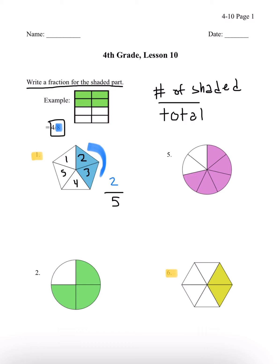Number 6, let's count: 1, 2, 3, 4, 5, and 6. We have 6, which is going to be our denominator. And here as well, we also have only 2 shaded. So 2 over 6 is our answer.